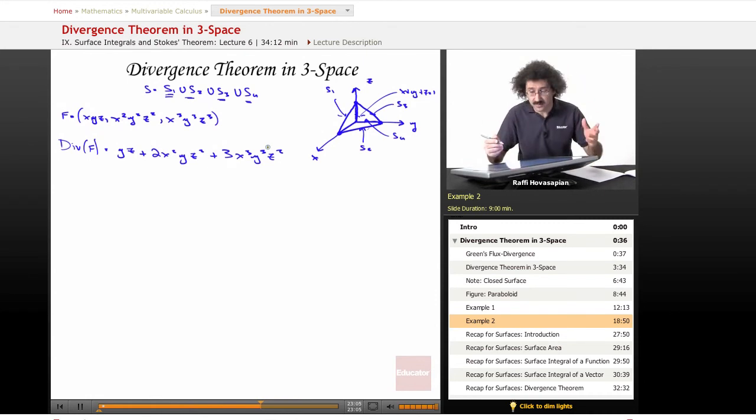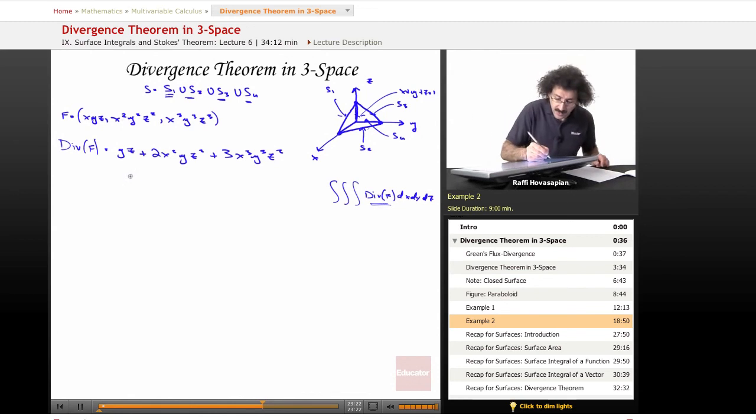So now that we have the divergence, we've just found the divergence, so we've taken care of the integrand. Now we need to figure out the upper and lower limits of integration for this particular region. X is going to go from 0 to 1.